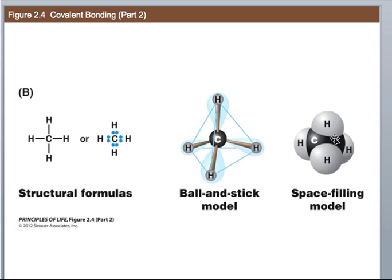That shape is recognized by different instruments in the cell, like enzymes that are going to do work with it, or other molecules it's going to interact with. Shape becomes very important, and covalent bonds help create the shape of a molecule.